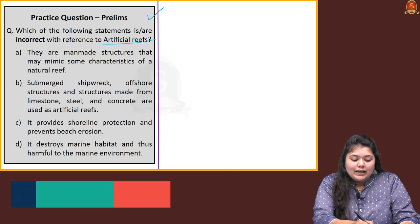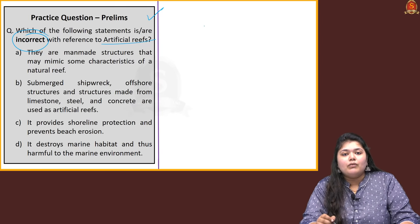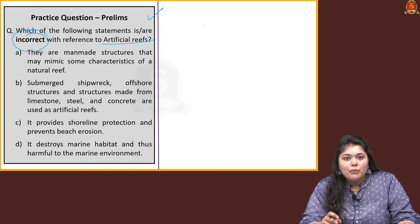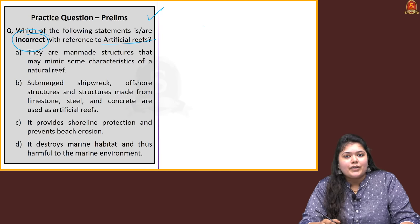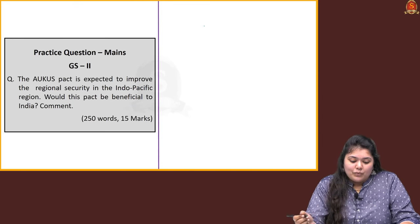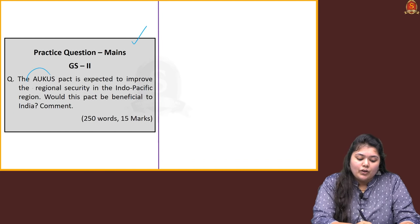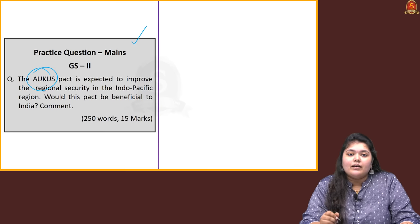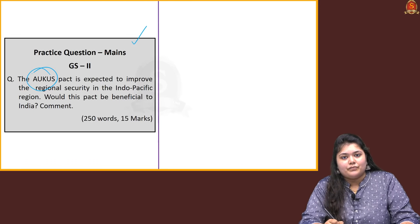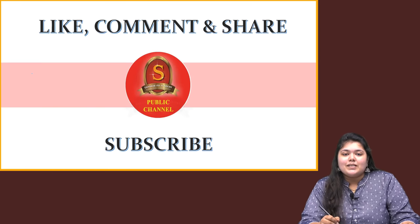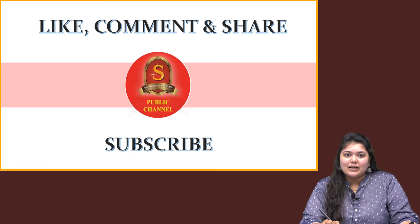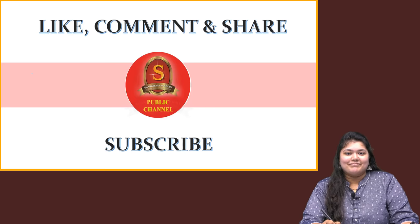The second prelims question is about safe harbor rates. Statement 1 — it is used for calculation of transfer pricing by foreign firms in India — is correct. Statement 2 — it eases compliance to taxation rules — is also correct, being a major benefit of safe harbor provisions. So the correct answer is option C, both 1 and 2. Now there is a quiz question framed on the artificial reefs discussion — you have to choose the incorrect statement from four given statements and post your answer with justification in the comments. There is also a mains practice question based on the AUKUS discussion. Thank you, and do subscribe to Shankar IAS Academy for more civil services preparation updates.